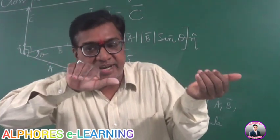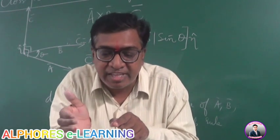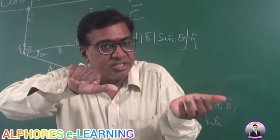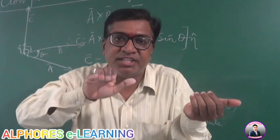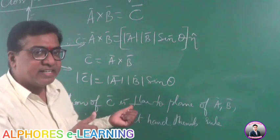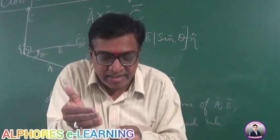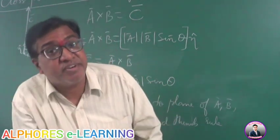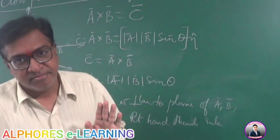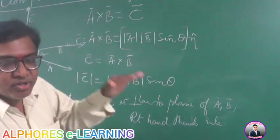If you take out your right hand thumb, stretching it outward, the folding of the four fingers denotes the angle between the vectors, and the thumb denotes the direction of the result. A screw works on the same principle: the folding of the four fingers gives the direction of rotation, and the thumb gives the direction of the screw. So the direction of this vector is given by the right hand thumb rule or right hand screw rule.